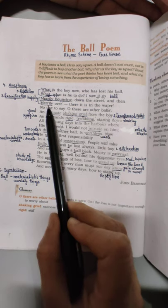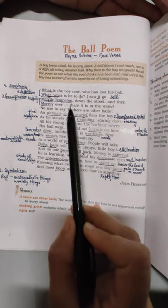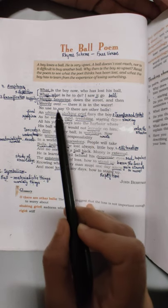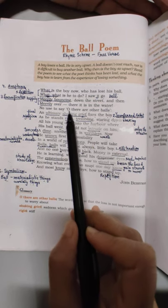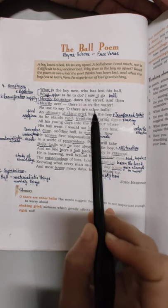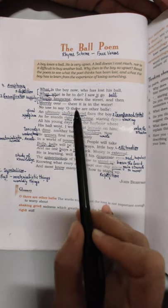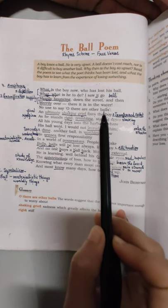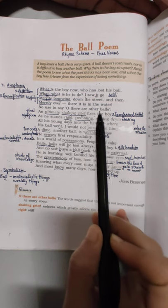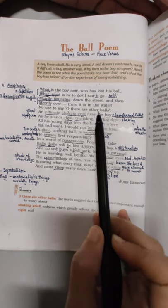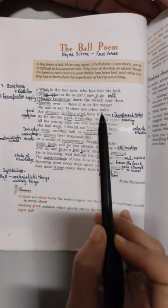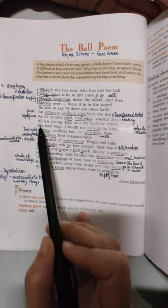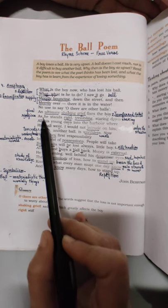Down the street, and then merrily over there, it is in the water. Woh pani mein padi huyi hai. No use to say, oh there are other balls. Ki bachche ko ye kehne ka koi fayda nahi hai ki there are other balls. Ki tum roh mat, dukhi mat ho. So in the second stanza, the reaction of the boy.